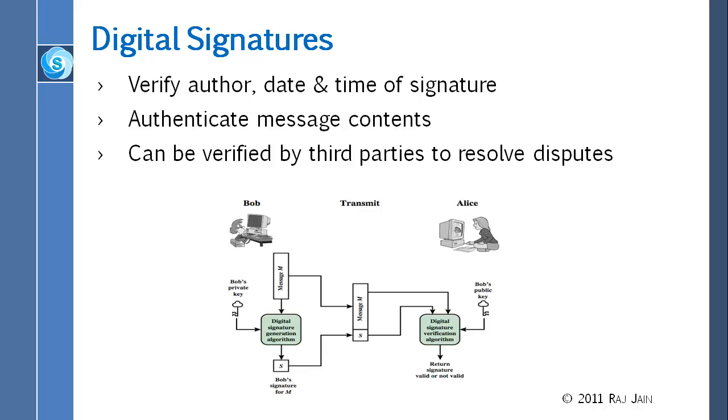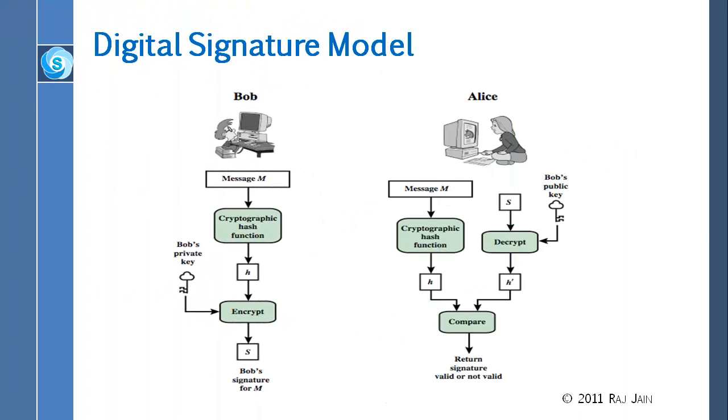So here the sender is Bob. Bob has a message, digitally signs that message. That signature is sent to Alice. Then Alice can do several things. First of all, she can verify that the signature is correct. And she can go to the court and the court can verify that the signature is correct, that the message has not been modified by Alice or anybody else. One simple way would be like we did for the MAC: you create a hash and you encrypt that hash with the private key. And then you can compare with the public key. And that is the simplest way.